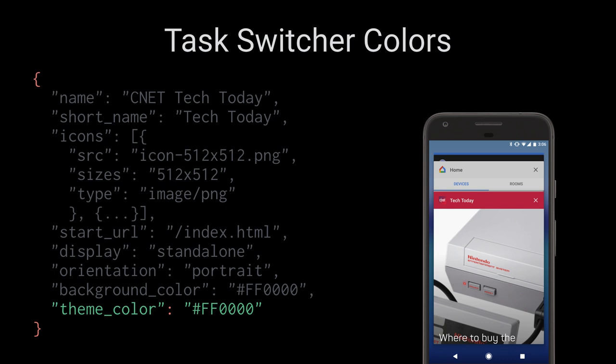Finally, on Android, progressive web apps behave like other native apps, switching within the task switcher. The theme color — the app bar color representing this app — is also controllable.